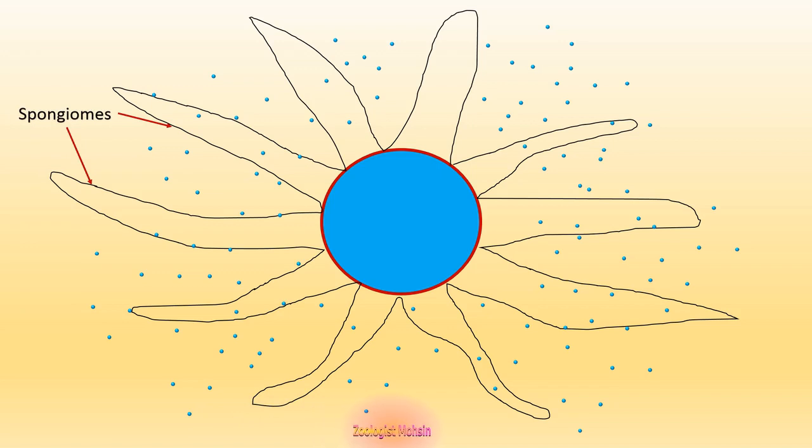The arms, also called collecting ducts or spongiomes, are connected to a central large vacuole having the ability to contract and relax or refill. So what's the process?